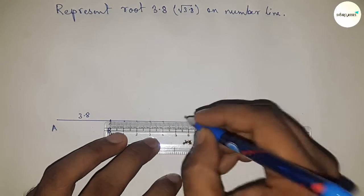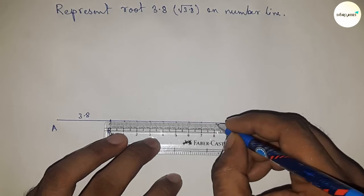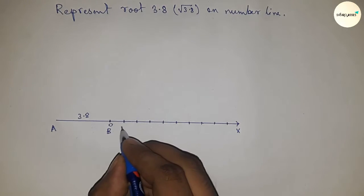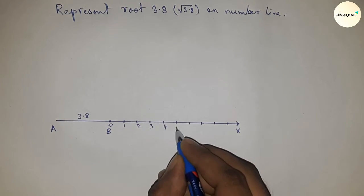Now mark the numbers on the line from B to X using the scale: 0, 1, 2, 3, 4, and so on. This is point C.